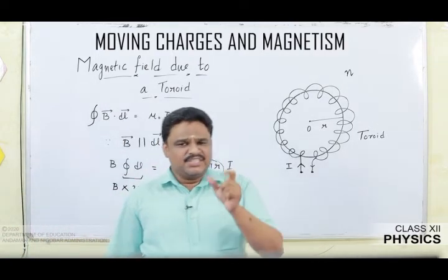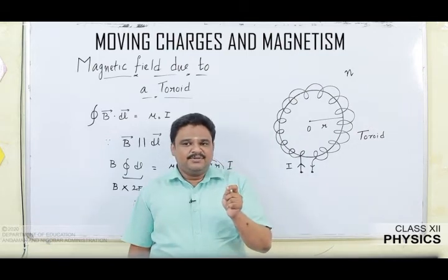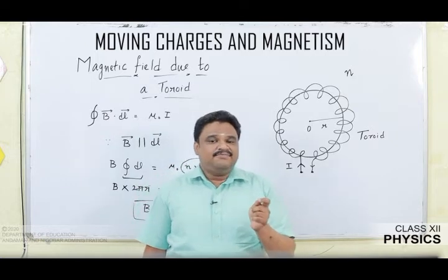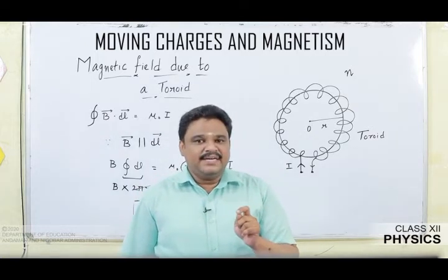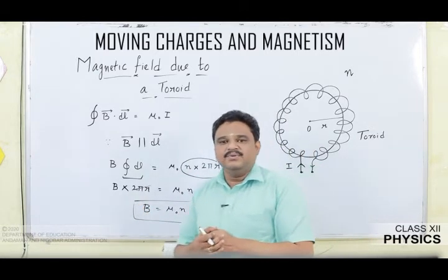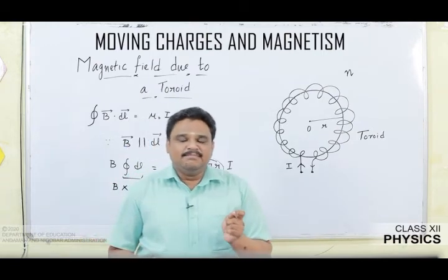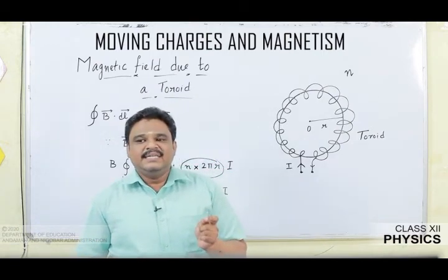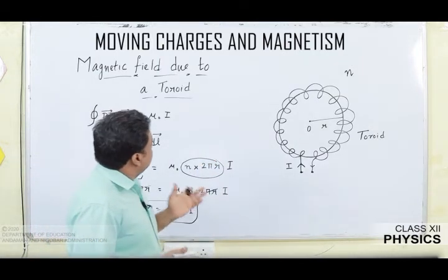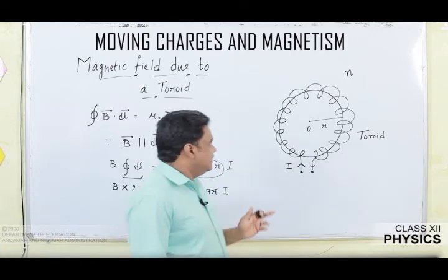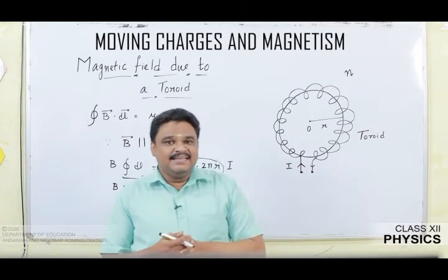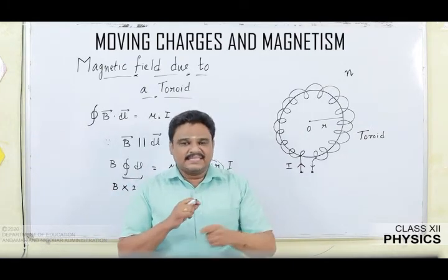The expression B = μ₀nI is very simple. Importantly, you can see a similarity — the expression we derived for the magnetic field at a point well inside a solenoid is the same for a toroid. In both cases, B = μ₀nI, where n is the number of turns per unit length.